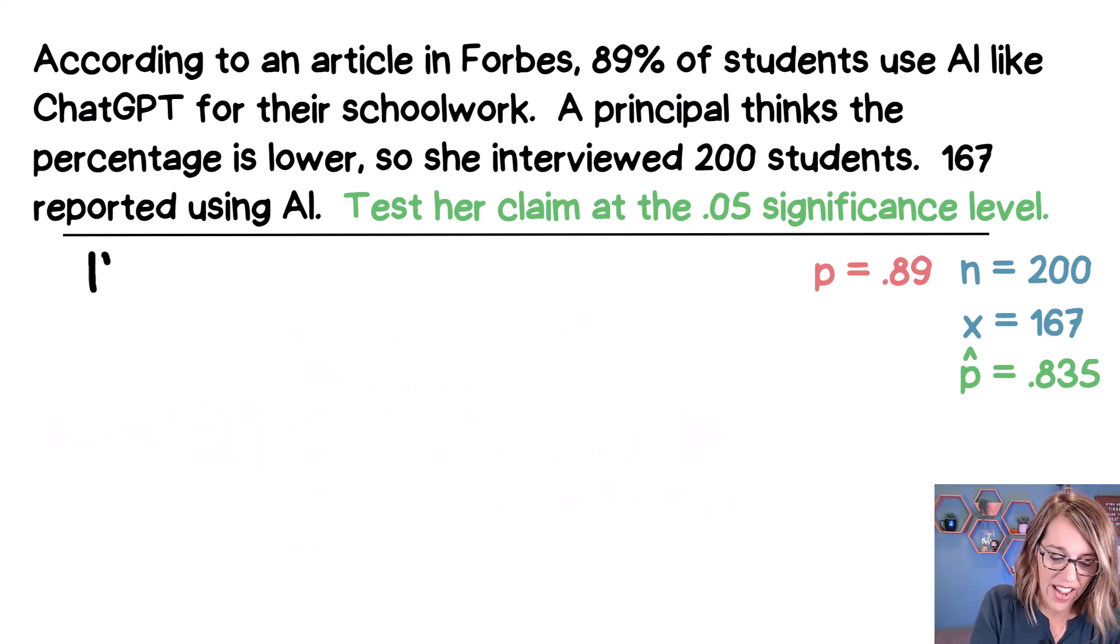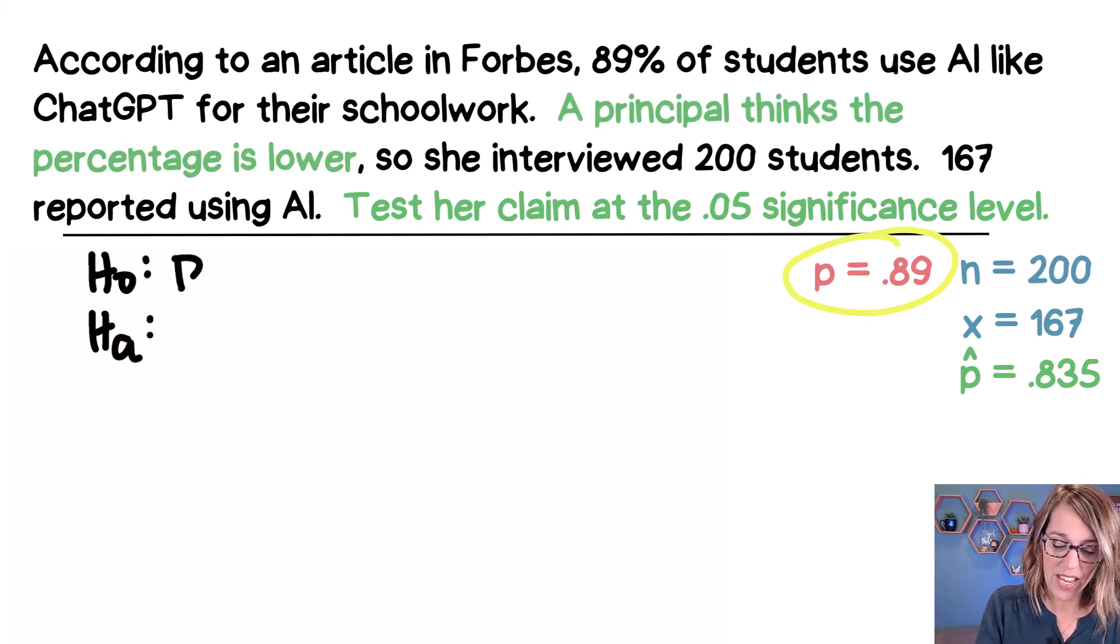Now we need a null, and we need an alternative hypothesis. So I'm going to use H sub A and H sub 0. Sometimes you'll see this H sub A as H sub 1 instead. Now for H sub 0, this is going to be what we're assuming to be true based on that expected value. So we're going to say that P is equal to 0.89.